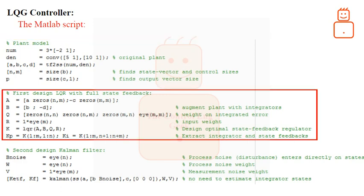In the second portion of the code, we are going to design the LQR controller. But before that, we are augmenting the process dynamics with integrators, and then defining the cost function matrices Q and S. Here I am replacing the matrix S with R just to follow the original code. The final step is designing the LQR controller through the MATLAB function LQR — note that you need to have the Control Toolbox installed. After the gain matrix K is computed, we extract the integrator and state feedback sub-gains from it, giving gains Kp and Kf for later use.